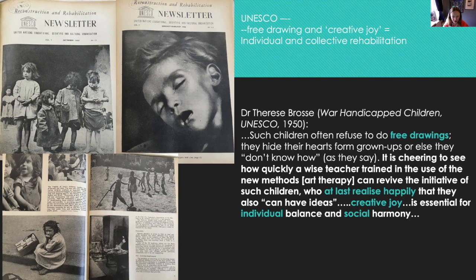UNESCO was doing two things: demonstrating abject childhood, as Simone Delioti writes, and as Rodonia and Fehrenbach write about humanitarian photography — and on the other hand promoting the idea of creative joy. UNESCO is imaging both utopian and dystopian visions of childhood, reflecting the precarity of what UNESCO's Director General Torres Bodet called the 'laboratory of illusions,' writing in 1949 that human rights are not a laboratory of illusions but are precarious — and you see that in the representations of children and child art.